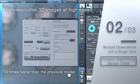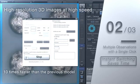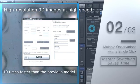High resolution 3D images are also possible, with speeds up to 10 times faster than the previous DSX model.